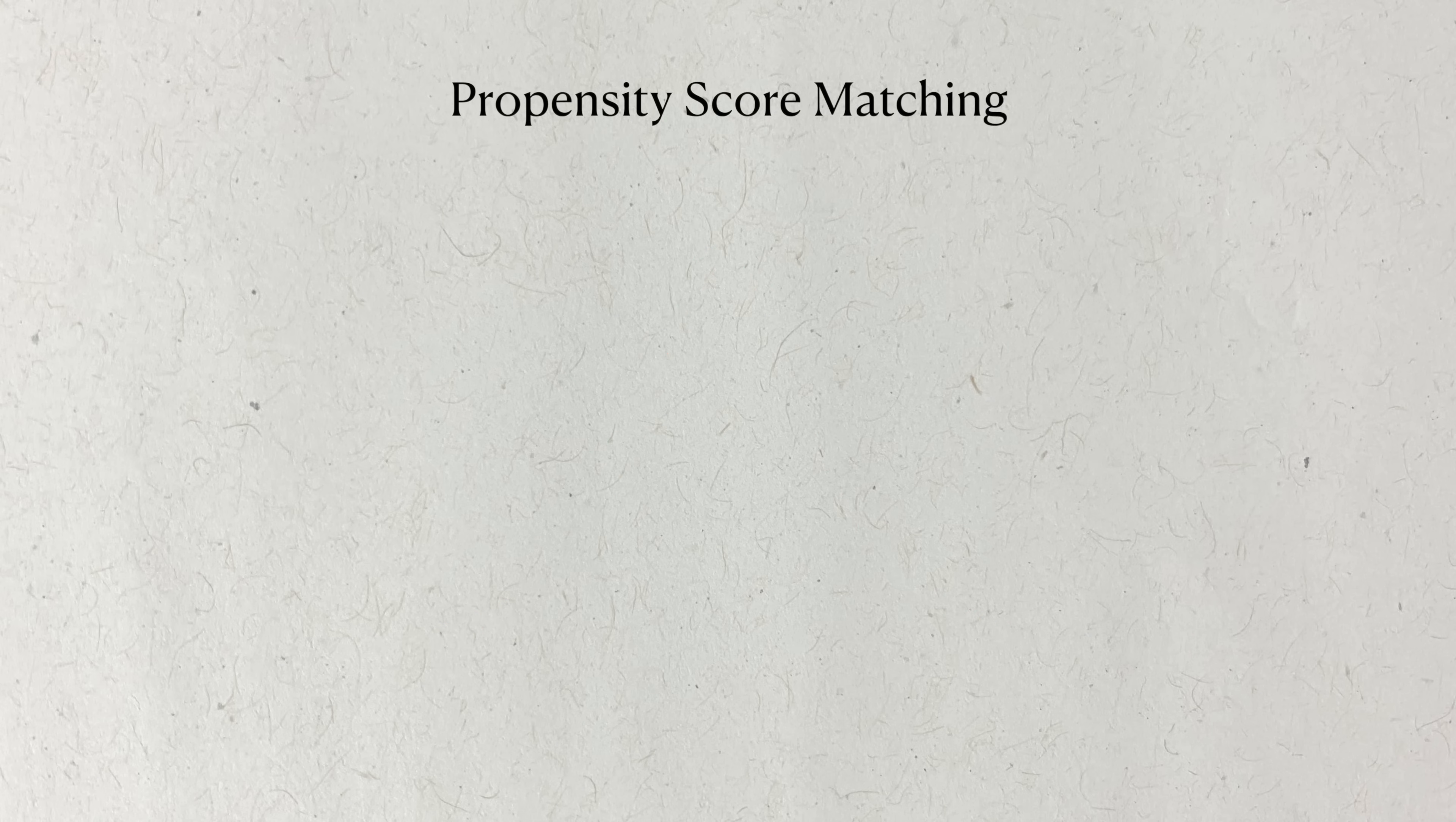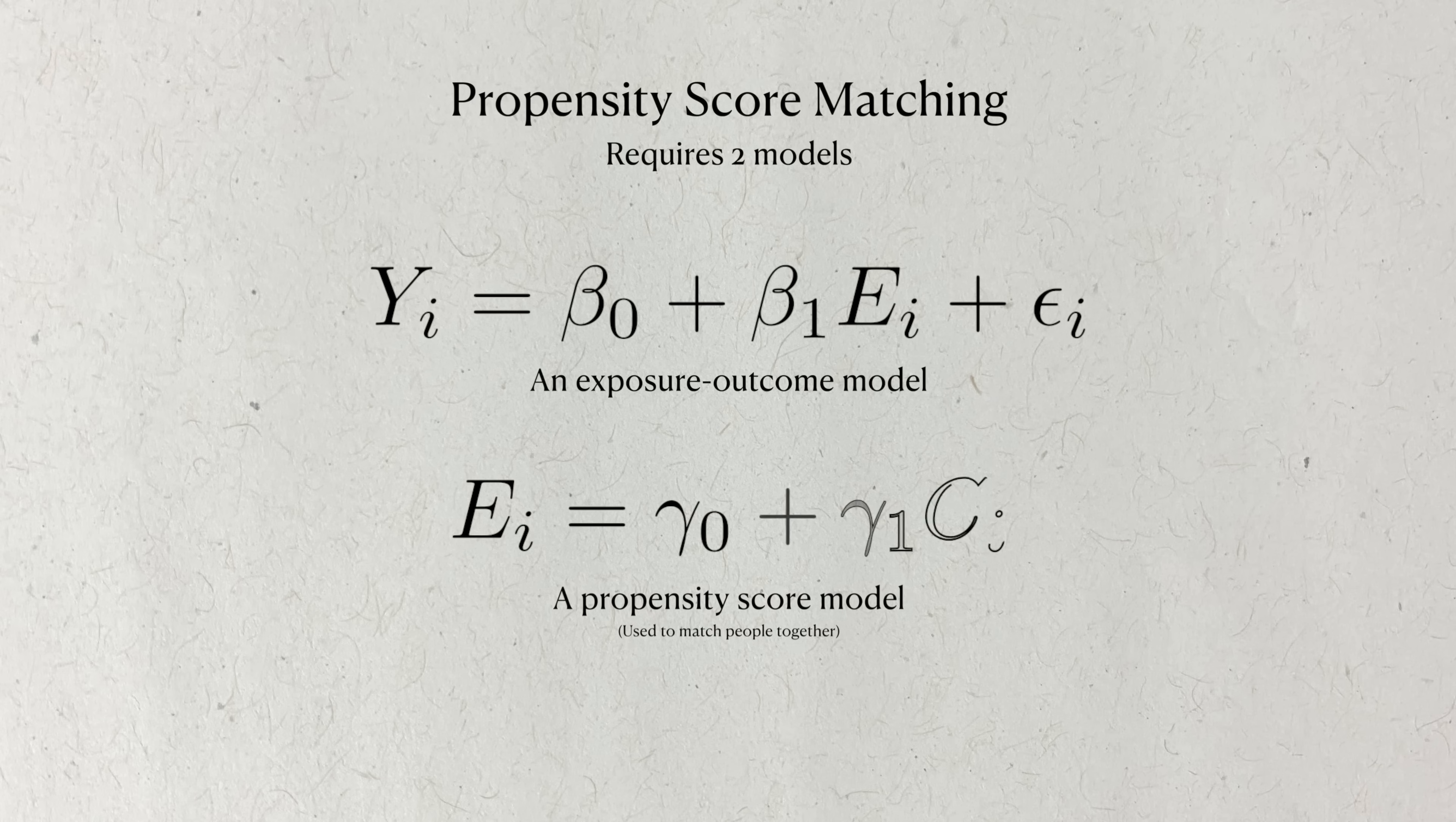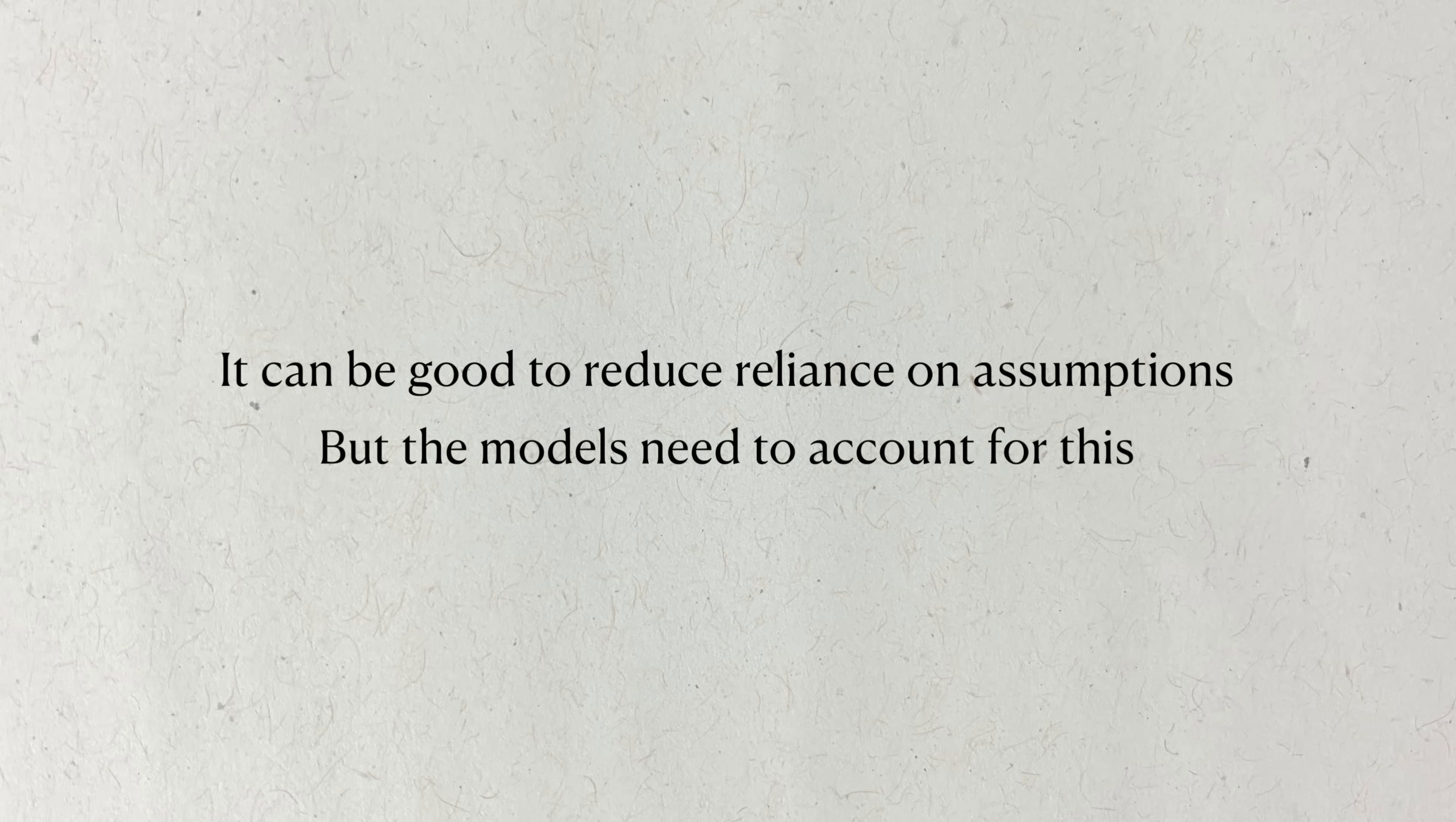In causal inference, there's a technique called propensity score matching. Propensity score matching is used to try to match people in a treatment group to people in a control group who are very similar to them. By doing this, you can produce estimates that better resemble a causal effect. Propensity score matching requires two models. One model to estimate the effect of the treatment on the outcome, and another to produce a score that is used to match people together. Both of these models have to be correctly specified for the results to be useful. Correct specification essentially means that we choose the correct model for its purpose, but this is almost never the case. To account for this, there are robust versions of propensity score matching that allow for one of these models to be wrong. The less assumptions we have to make, the better. We have to make sure our models can actually account for this.